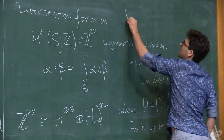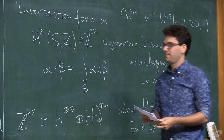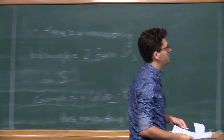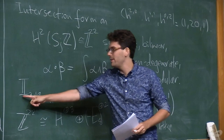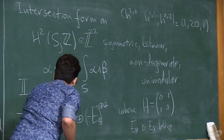The Hodge numbers H²⁰, H¹¹, H⁰² are 1, 20, 1. I'm going to call this lattice Λ₃,₁₉ — it's the unique even unimodular lattice of signature (3,19).